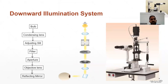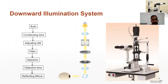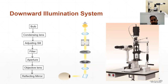Now let's see the downward illumination system. The downward illumination system is similar to the upward illumination system. One difference is that it uses a mirror kept at 45 degrees to direct the light into the patient's eye, as shown here.